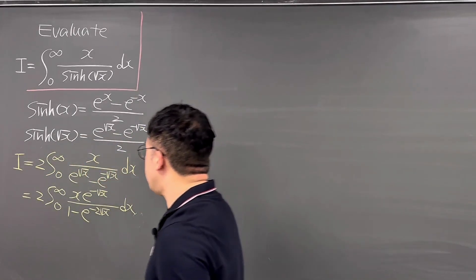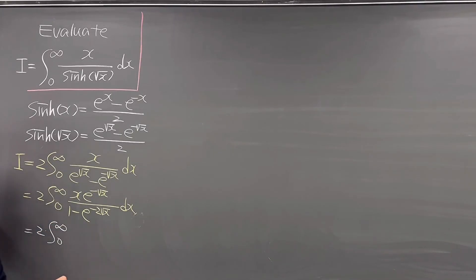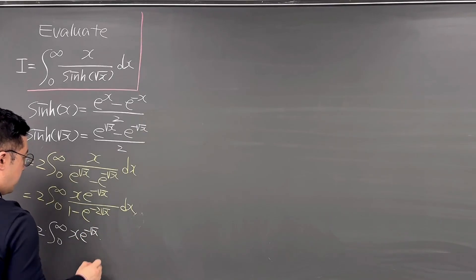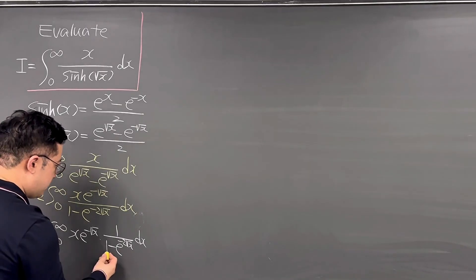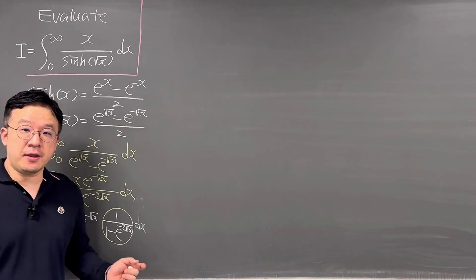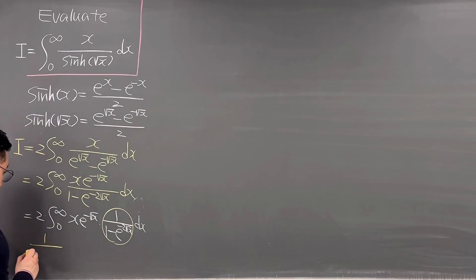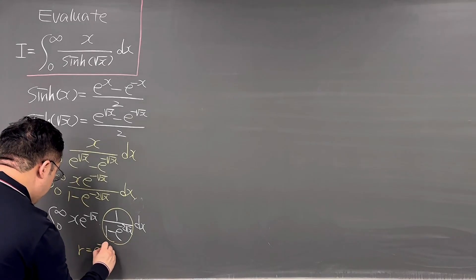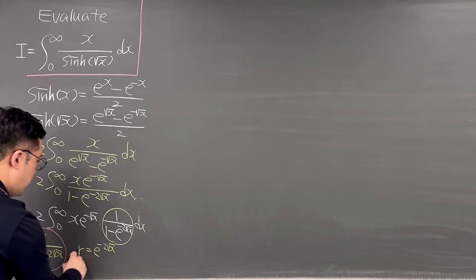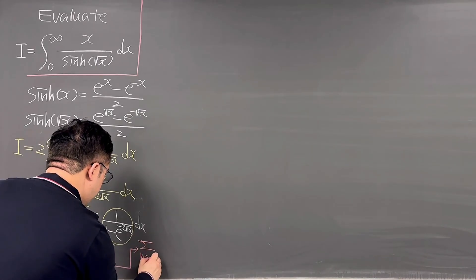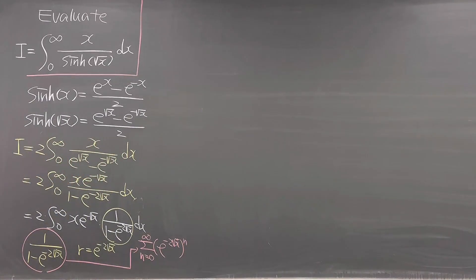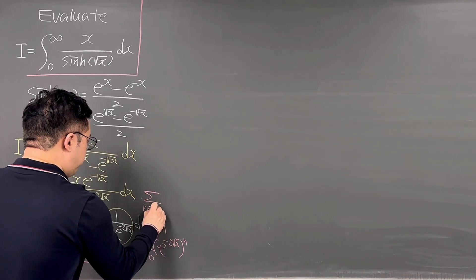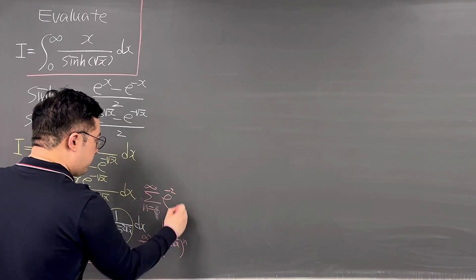Rewriting I a little bit, it is the same as 2 times the integral from 0 to infinity of x times e^(-√x) times 1 over (1 minus e^(-2√x)) dx. This fraction is related to the infinite geometric sum: 1 over (1 minus e^(-2√x)) equals the summation from n=0 to infinity of e^(-2n√x).